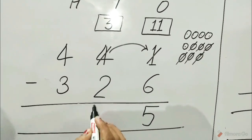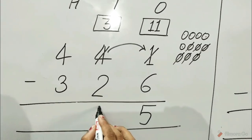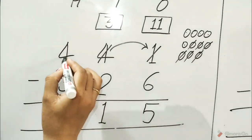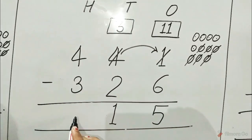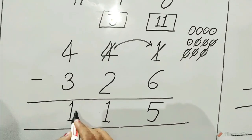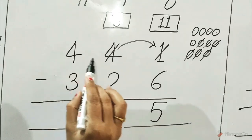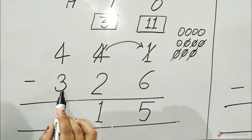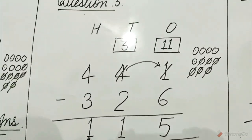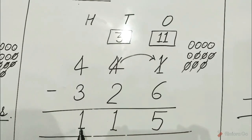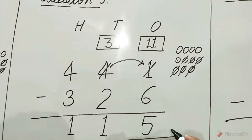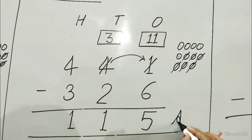Write 5 in the ones column and subtract the tens column. 3 minus 2 is equal to 1. 4 minus 3 is equal to 1. 441 minus 326 is equal to 115. Answer.